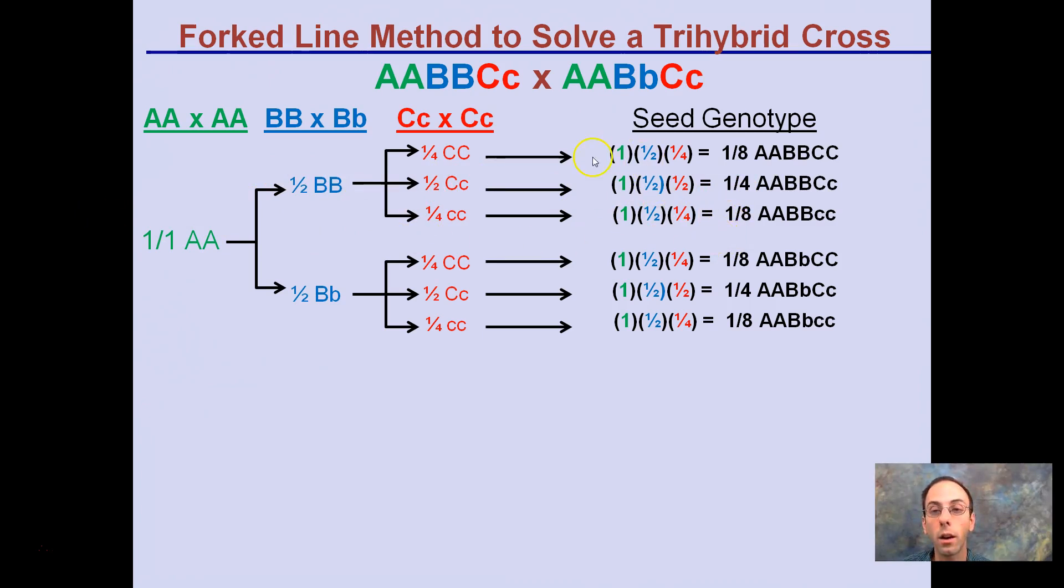Not only are we carrying those numbers, and I color coded those accordingly, we're also carrying around those alleles. So you can see that one is that big A, big A, indicated here. The half is the homozygous dominant for B, and the quarter is the homozygous dominant for C. So this is how we develop our seed genotypes with this fork line method.